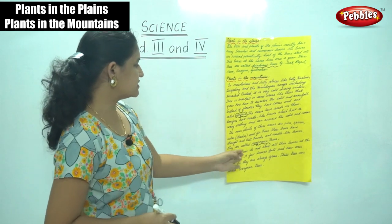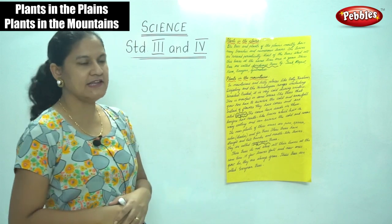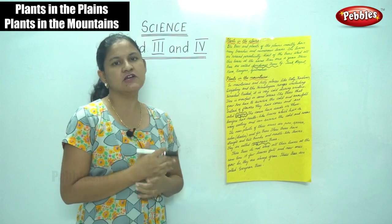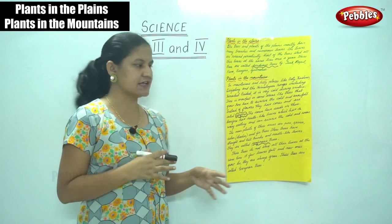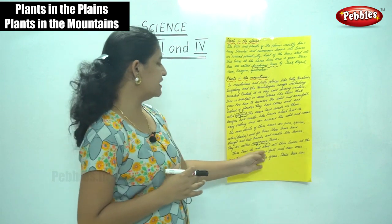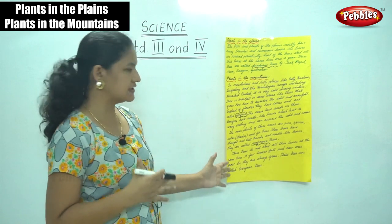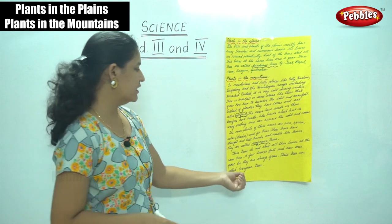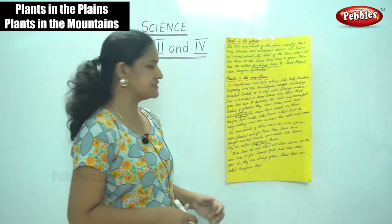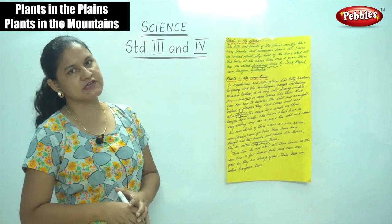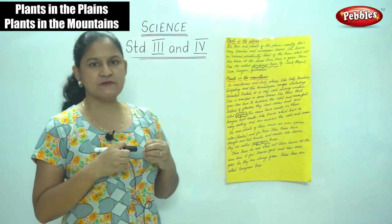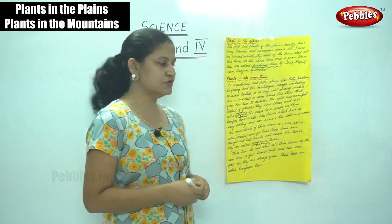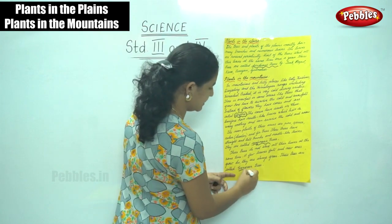Coniferous trees do not shed all their leaves at the same time. Only a few leaves fall and new ones grow back, so they are always green. These trees are therefore called evergreen trees.